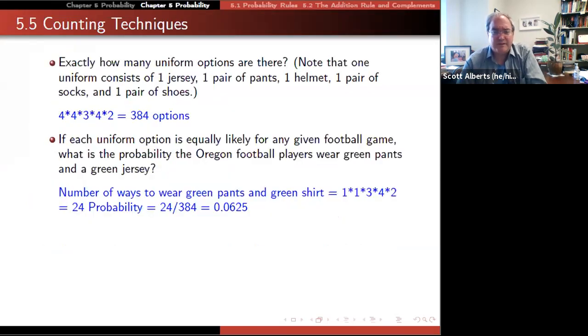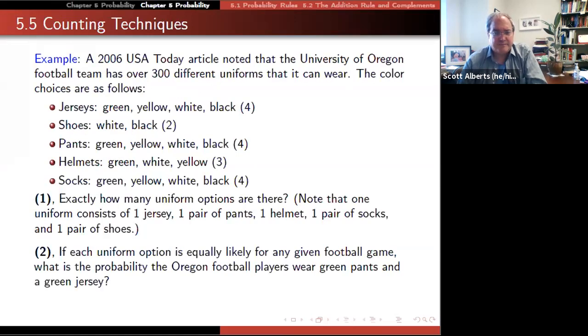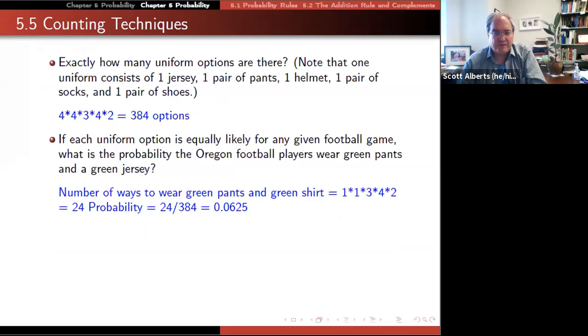To work this out, we can say, well, there are four jerseys, four pants, two shoes, three helmets, and four socks. So we just multiply those together: four times four times three times four times two, and we get 384 options. So that's a lot of different kinds of uniforms.